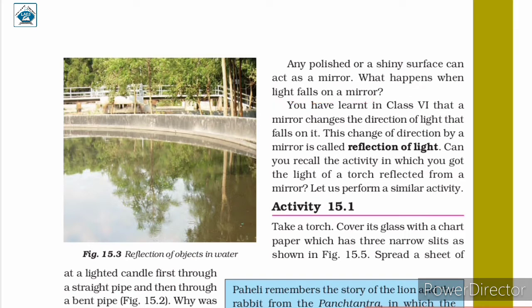In standard 6, you learned that a mirror changes the direction of the light that falls on it — this is called reflection of light. The change of direction of light by a mirror is called reflection of light. You also performed an activity in which you got the light of a torch reflected from a mirror, and now we are going to perform a similar activity.